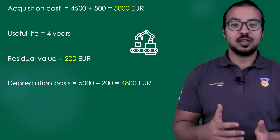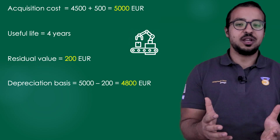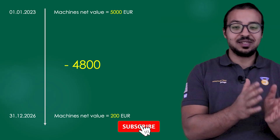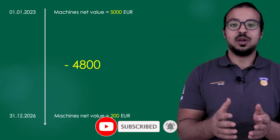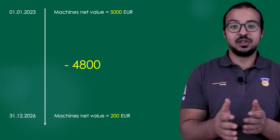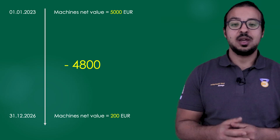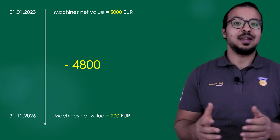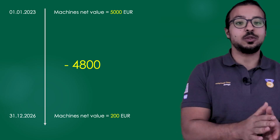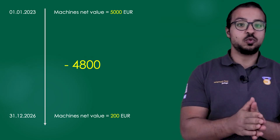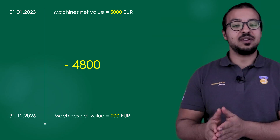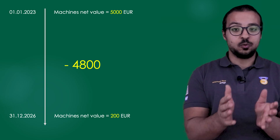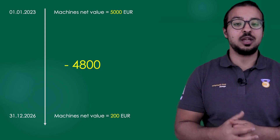So what is the depreciation expense and why do we need to post it? Let's look at the financial entries over the lifetime of the asset. When we post the fixed asset acquisition, we have a debit to the machine's fixed assets account for 5,000 euros and a credit to accounts payable for 5,000 euros. This happened on 1st of January 2023. The useful life is 4 years with a residual value of 200, so through the 4 years we are going to consume 4,800 euros of the asset's value.